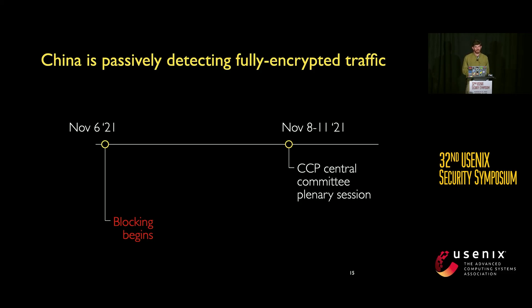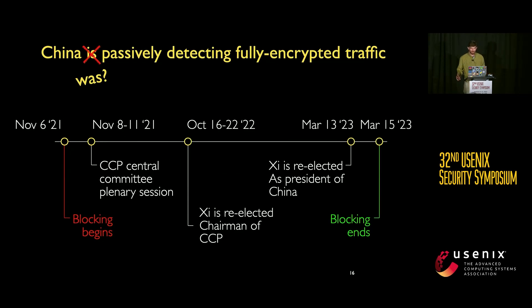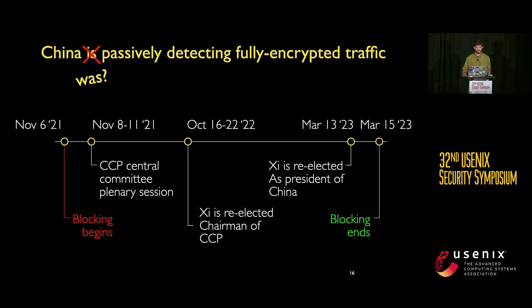The last question is why this blocking happened when it did. The blocking began on November 6th, 2021, just a few days before the Chinese Communist Party Central Committee began a somewhat controversial meeting. On March 15th, 2023, when the USENIX Artifact Evaluation Committee tried to verify our results, the blocking had stopped. Shortly before that date, Xi Jinping was re-elected as president of China, having completed some of the political goals he may have been pursuing — suggesting there was no longer a need to continue the blocking. We know that in the past, censorship has revolved around political events, so we find this a reasonable explanation.